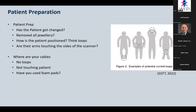Patient preparation: has the patient changed? Have they removed all jewellery? Think about positioning and loops — are hands touching, linked, or knees and feet touching? Cables from coils should not run next to the patient with loops, and if they are touching the patient, use foam pads between the patient and the cable for insulation. Also check whether the patient's arms are touching the sides of the scanner bore.